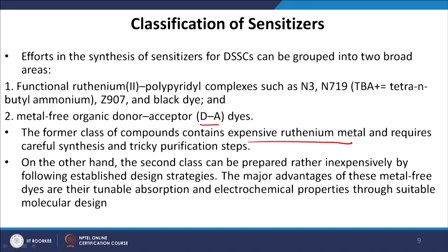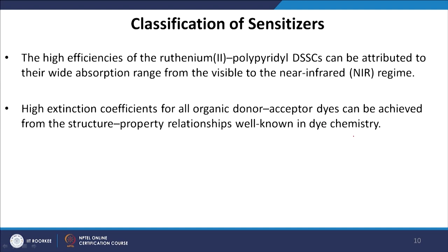The fabrication of ruthenium dyes is cumbersome and involves many costly purification steps. On the other hand, the metal-free organic donor-acceptor based dyes are prepared in a rather inexpensive way. By following established design strategies, the major advantage of these metal-free dyes is their tunable absorption and electrochemical properties through suitable molecular design. The high efficiency of ruthenium polypyridyl DSSCs is attributed to their wide absorption range from visible to near-IR, and similarly high extinction coefficients for organic D/A dyes can be achieved through well-known structure-property relationships in dye chemistry.